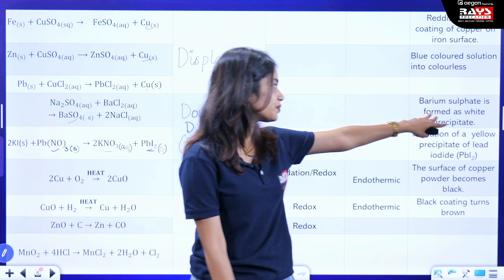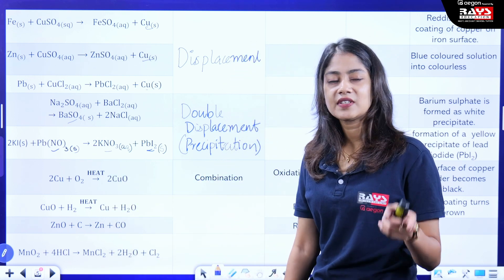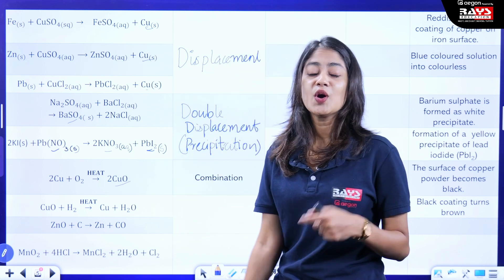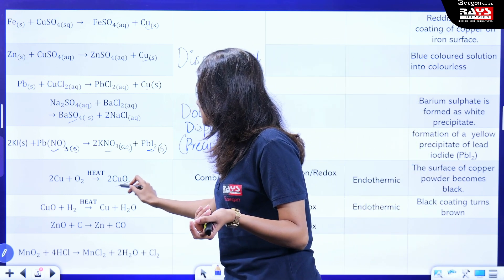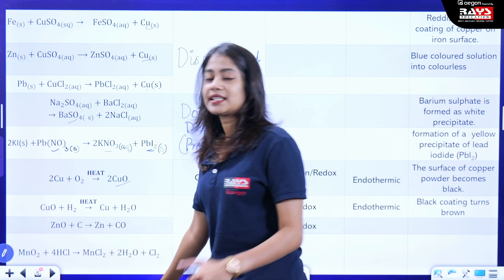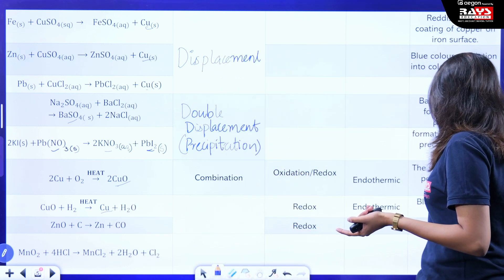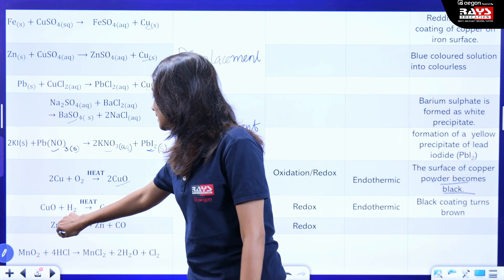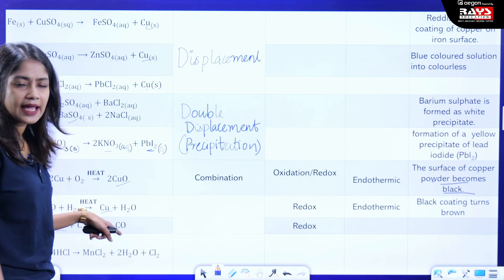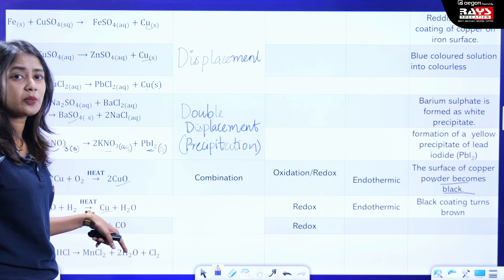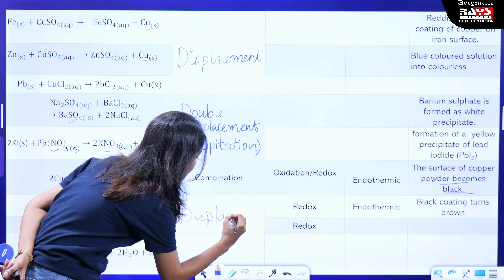Note down the white precipitate which is barium sulphate and the yellow precipitate which is lead iodide. Next, copper in the presence of oxygen, when heated, is converted to copper oxide — this is an example of a combination reaction, and many questions are related to this topic. Next, copper oxide reacts with hydrogen and is converted to copper; the colour change will show copper as black. Then zinc oxide reacts with carbon to form zinc and carbon monoxide. Displacement takes place in these reactions, so they are examples of displacement reactions.